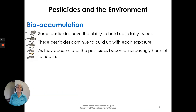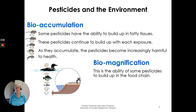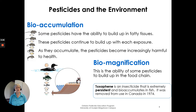Bioaccumulation: some pesticides have the ability to build up in the fatty tissues of animals. These pesticides continue to build up with each exposure, and as they accumulate, the pesticides become increasingly harmful to health. Biomagnification is the ability of some pesticides to build up in the food chain. Toxaphene is an insecticide that is extremely persistent, it bioaccumulates in fish, and it was removed from use in Canada in 1974.